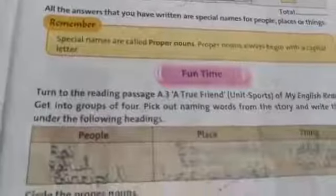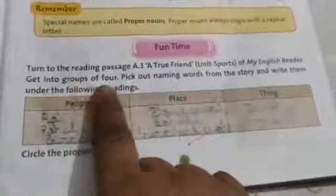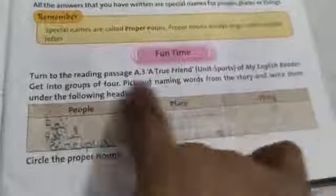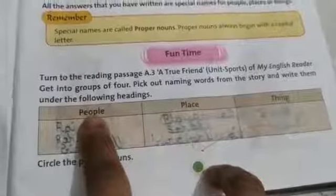Now let us move to fun time. Turning to the reading passage of True Friends — Unit Sports of my English reader. Get into groups of four and pick out the naming words from the story. Write them under the following headings: people, place, and things. This is your homework — worksheet number 3. Sort out the names of people, places, and things from the chapter True Friends. This is your homework of 28th April.